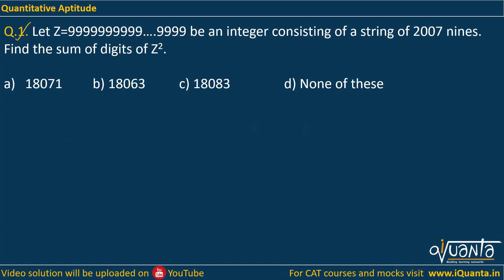The first question is: Let Z = 999...9999 be an integer consisting of a string of 2007 nines. So the digit 9 has been written 2007 times in this integer Z.